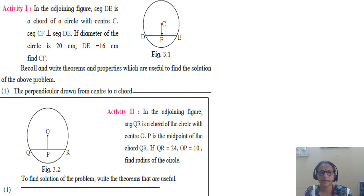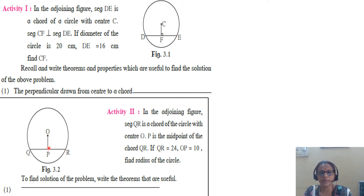Second activity. In the given figure, QR is a chord of a circle with center O. P is the midpoint of chord QR. QR is 24 and the distance OP is given to be 10. Find the radius of the circle, that is find OQ.